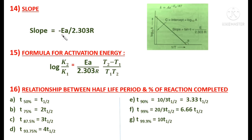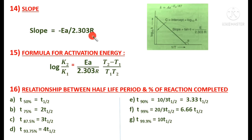When drawing a graph between log k versus 1/T, we get a straight line. The intercept gives log A (where A is the frequency factor) and the slope gives −Ea/(2.303R). So slope = −Ea/(2.303R). If two rate constants at two different temperatures are given, the activation energy can be found using: log(k₂/k₁) = (Ea/2.303R) × (T₂ − T₁)/(T₁T₂), where k₂ is the rate constant at T₂ and k₁ is the rate constant at T₁.